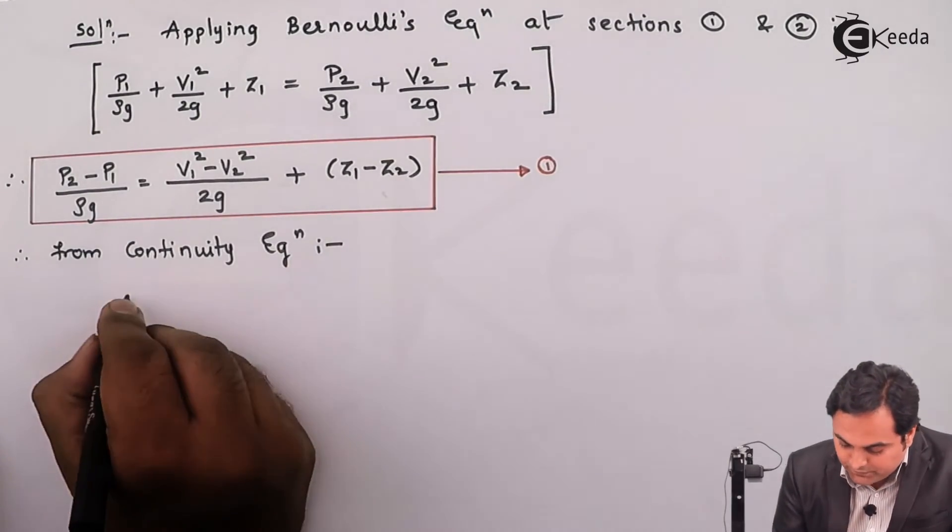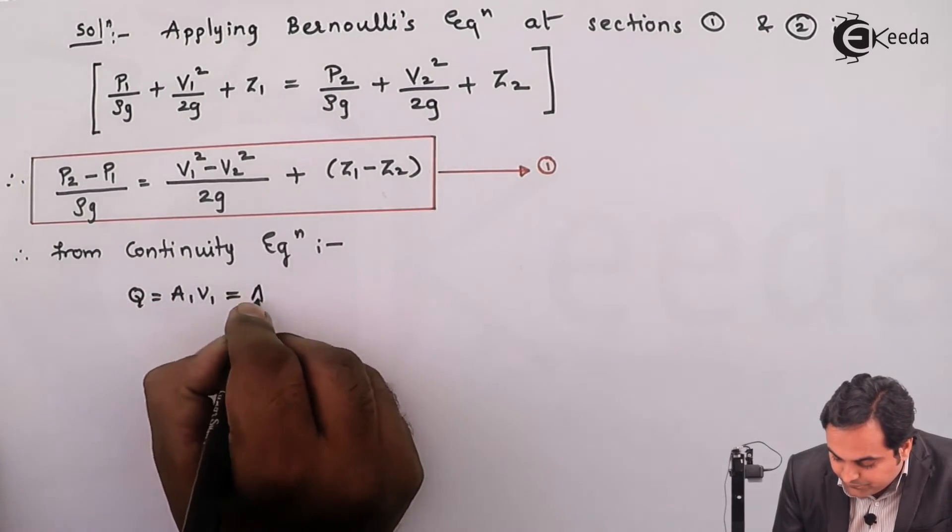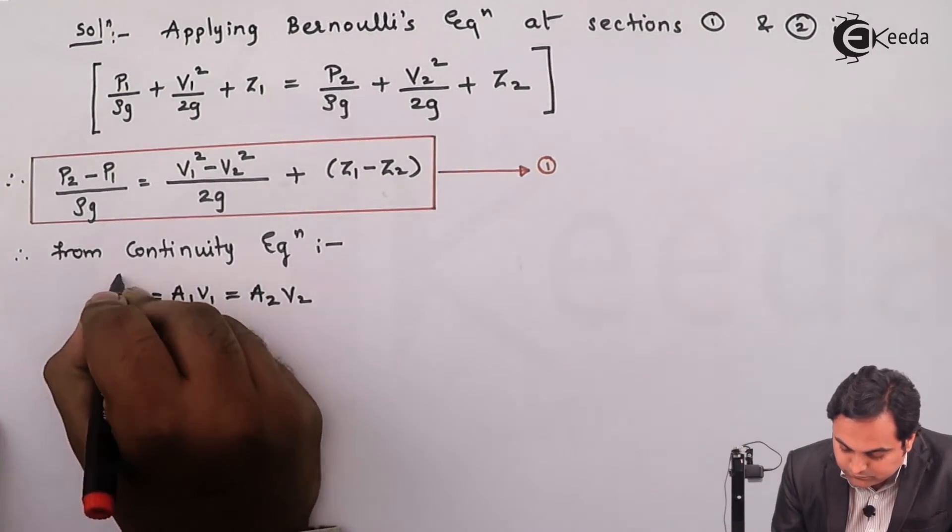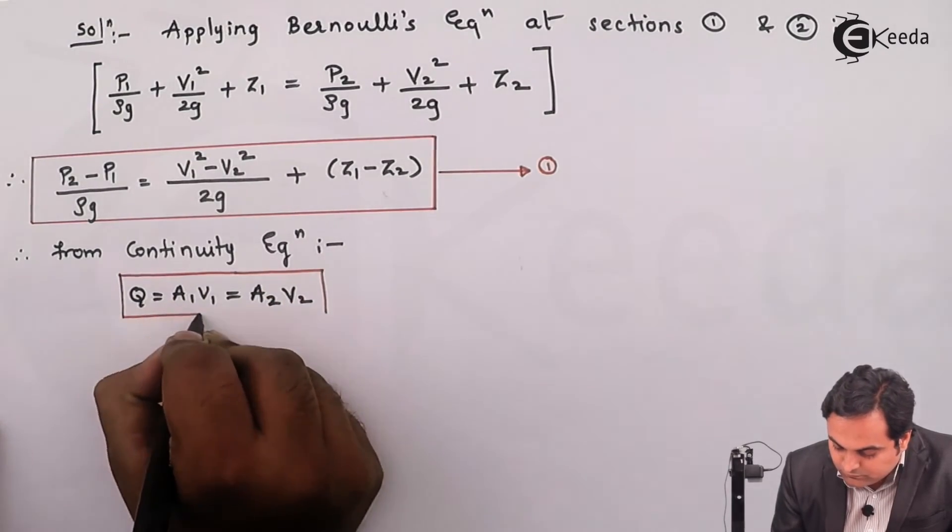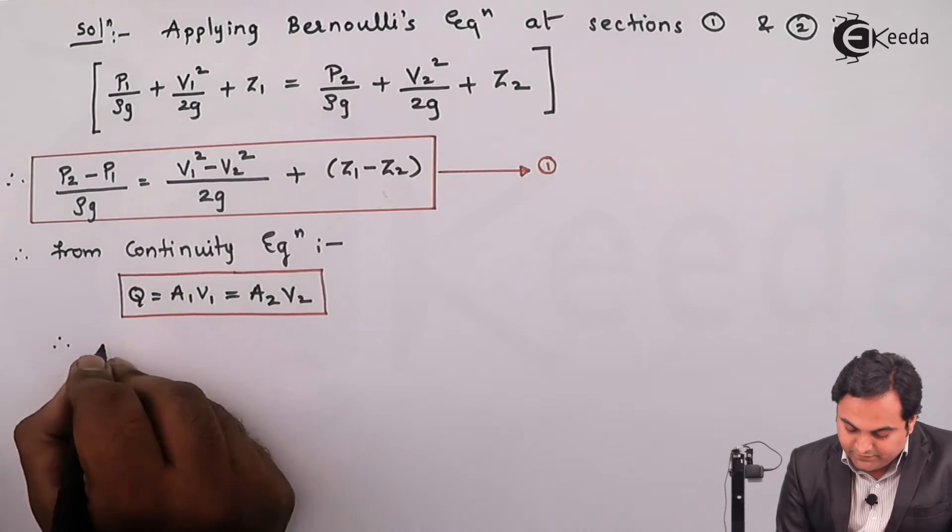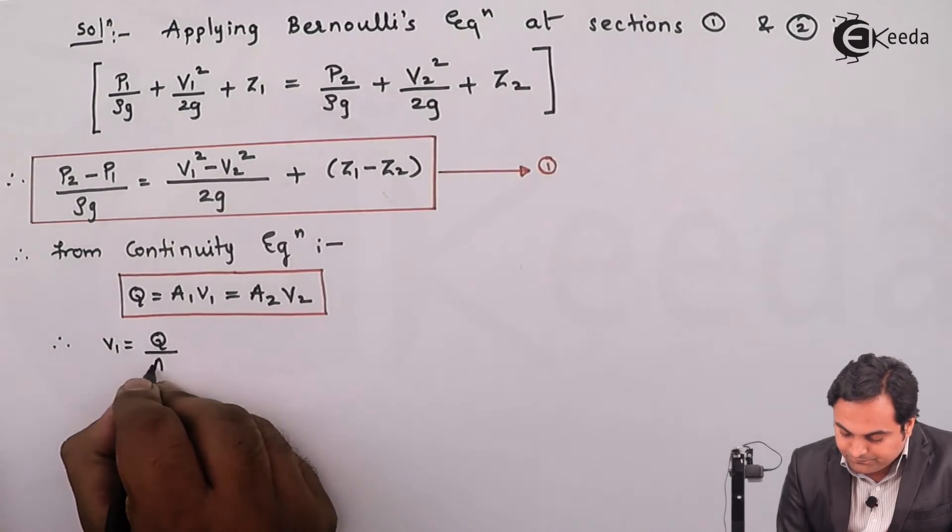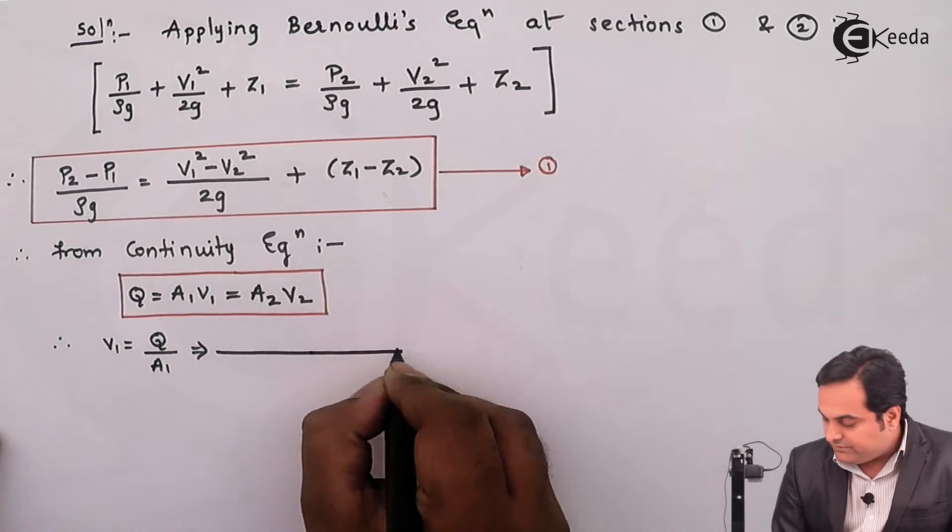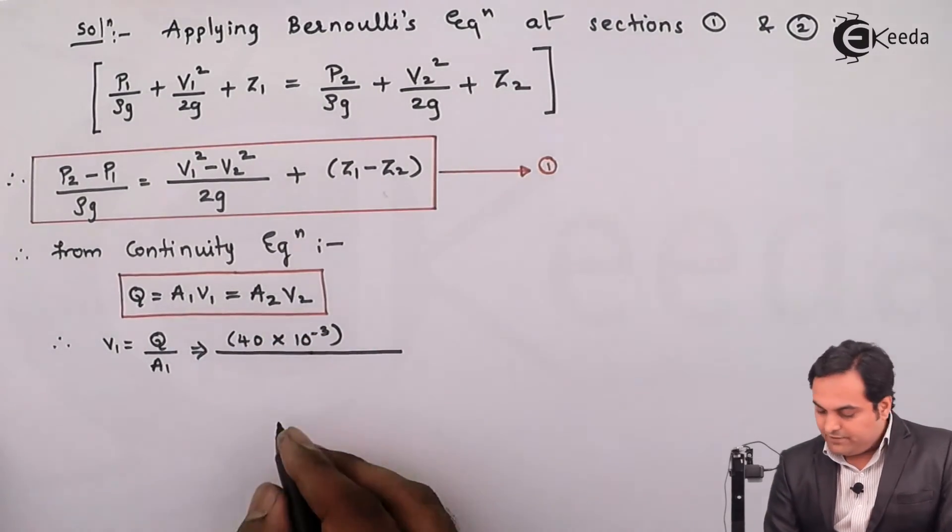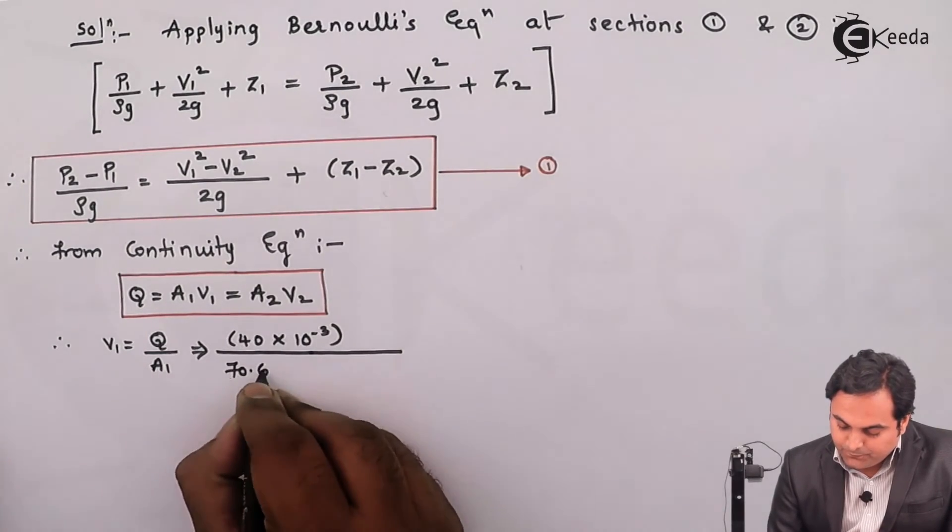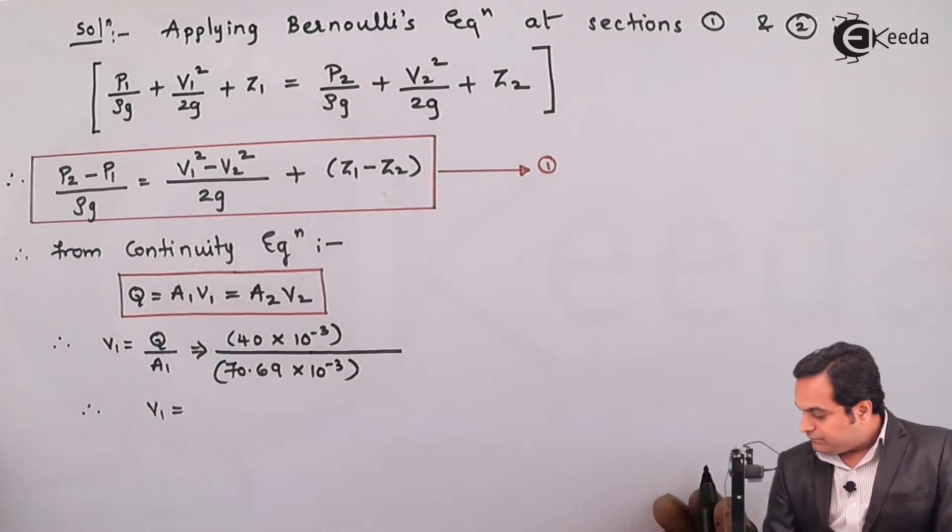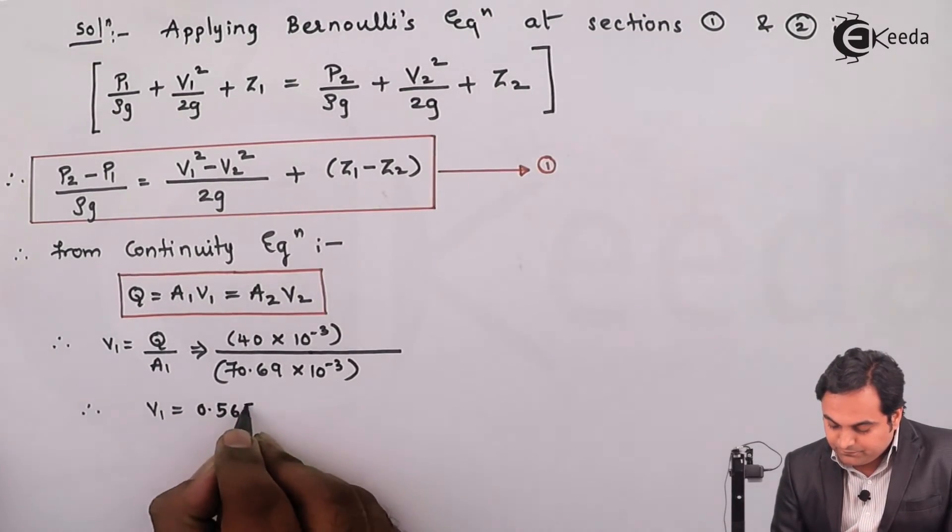From continuity equation, the discharge Q is equal to A1 V1 equal to A2 V2. From here I'll get V1 and V2. V1 is equal to Q upon area 1. The discharge Q is 40 into 10 raise to minus 3, upon area 1, 70.69 into 10 raise to minus 3. So from this I'll get V1 which is 0.565 meter per second.